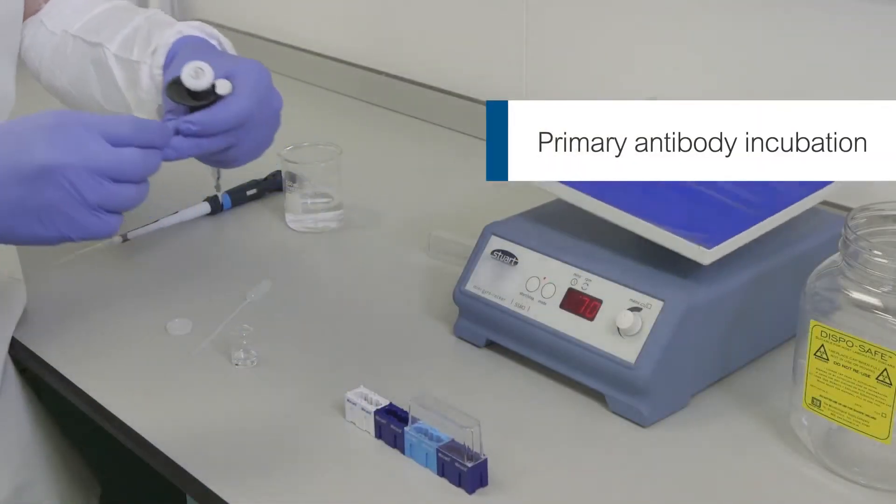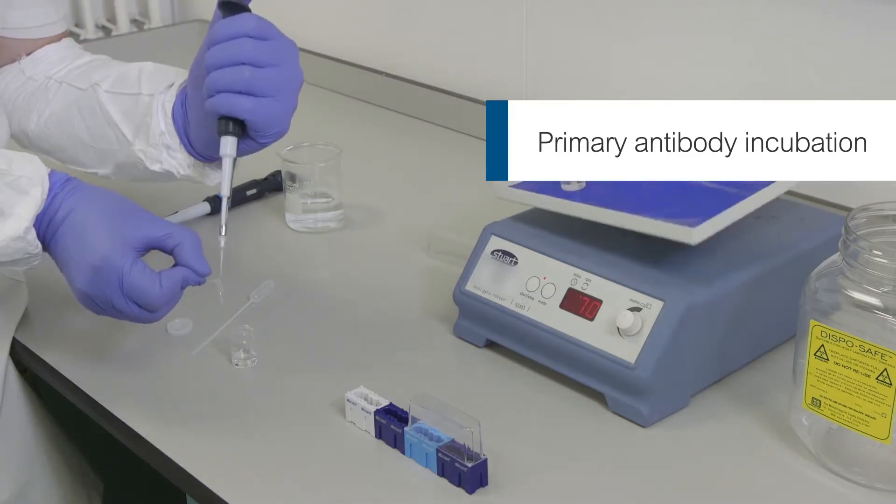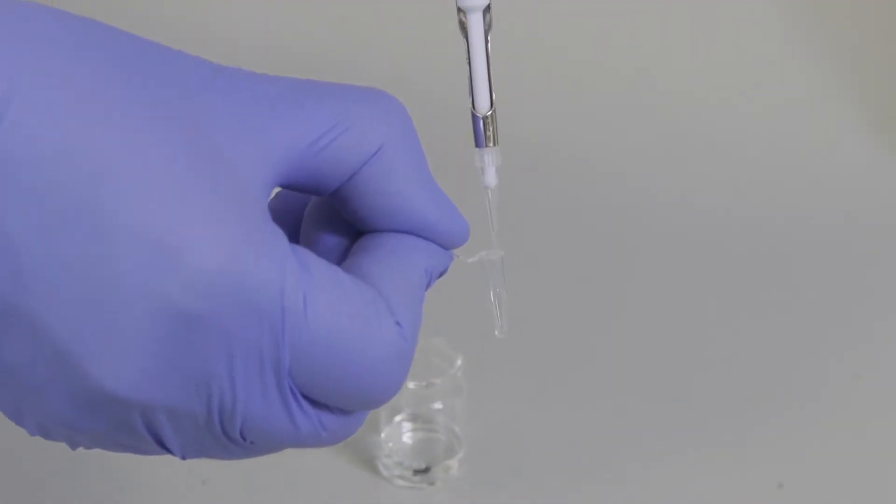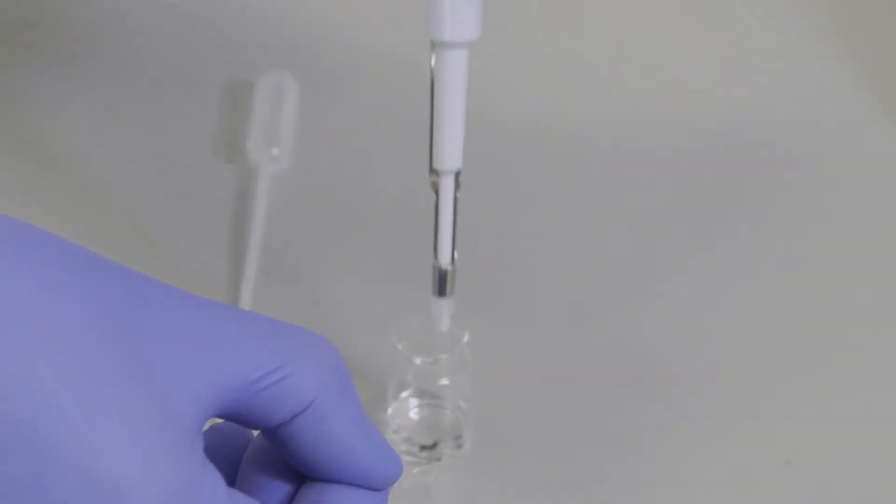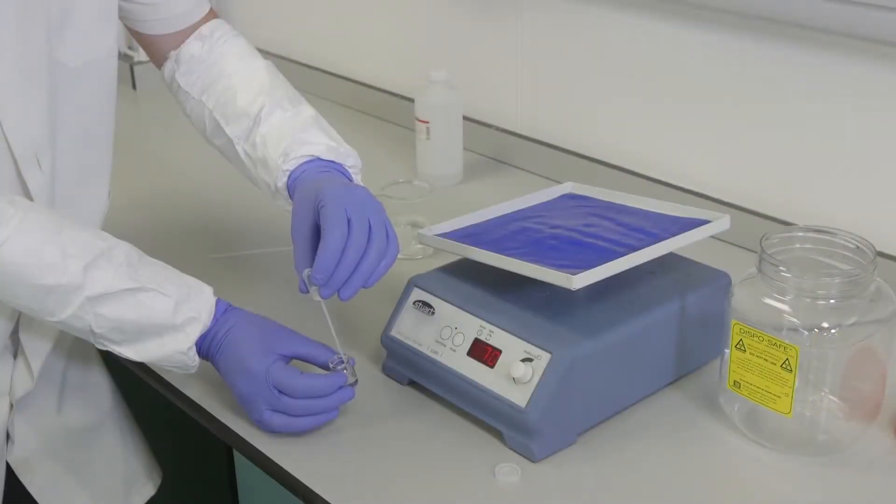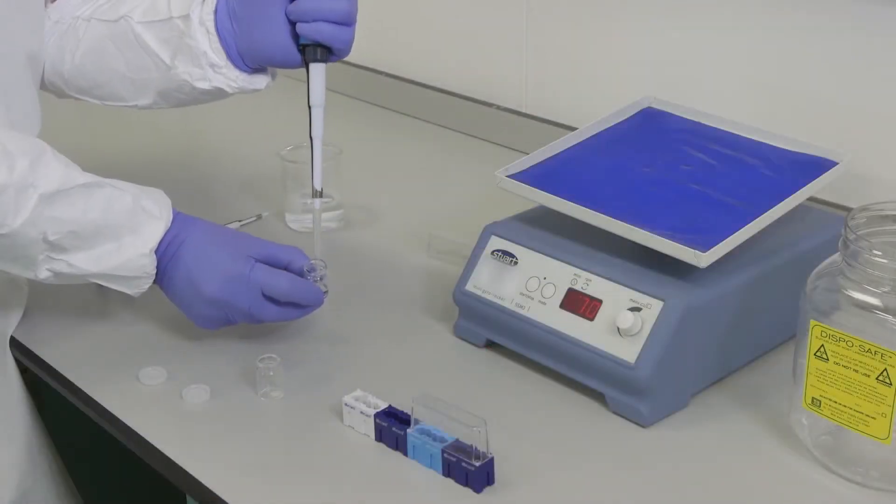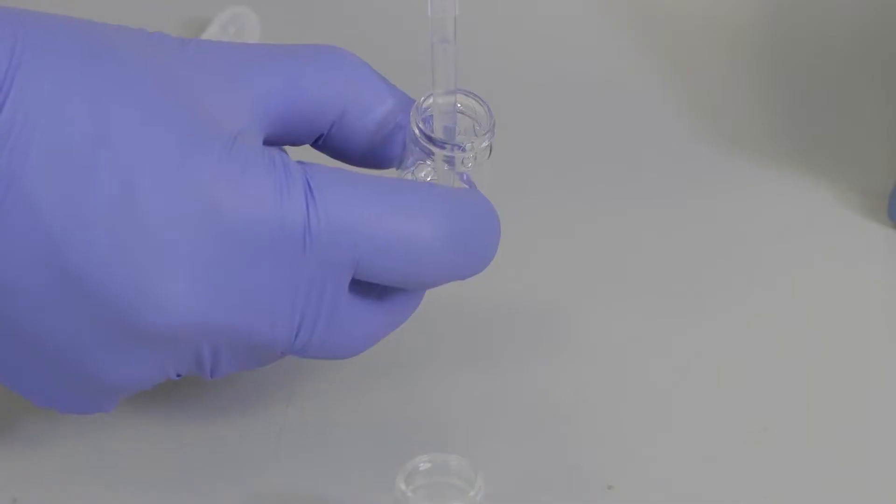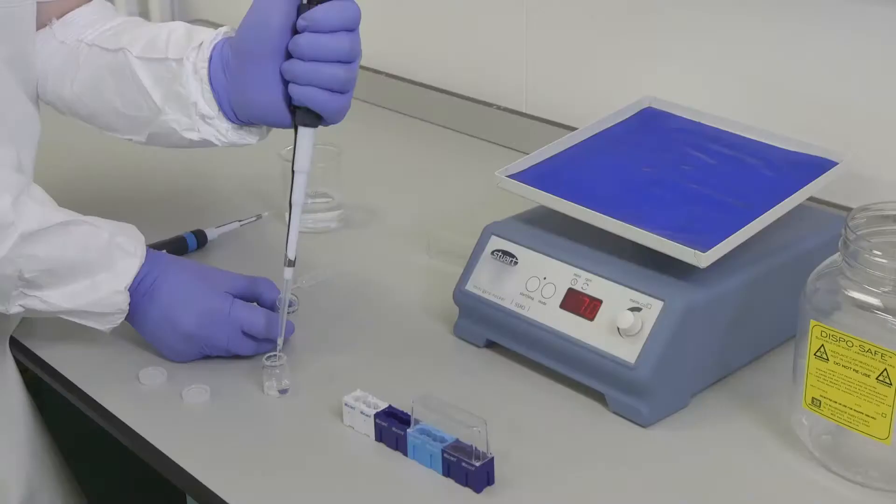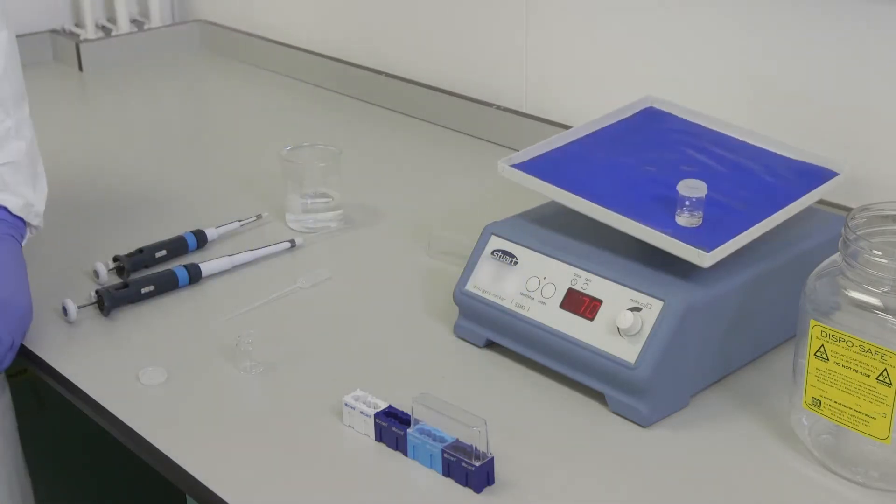Prepare the primary antibody solution by diluting the primary antibody in the Tris Triton solution to the correct dilution factor. A good starting point is the guideline provided by Abcam with the product, but it is recommended to optimize this for each antibody used. Remove the blocking solution, do not wash, and add the primary antibody solution to the brain slice. Leave it to incubate overnight under agitation at 4 degrees Celsius.